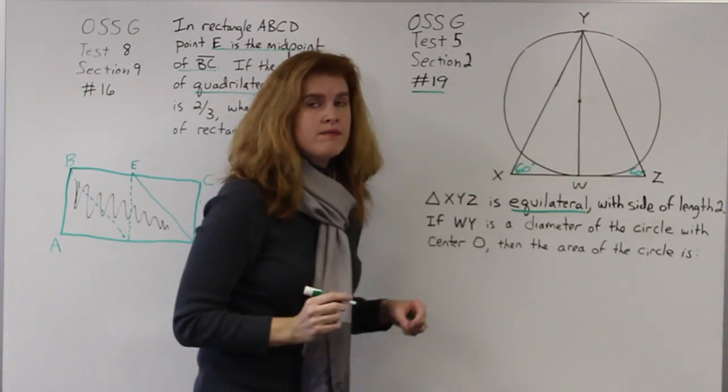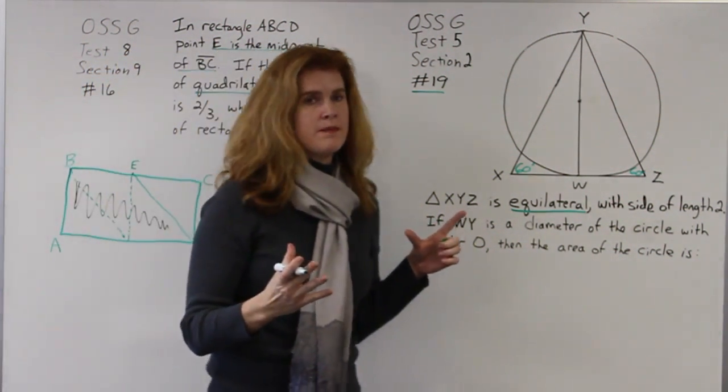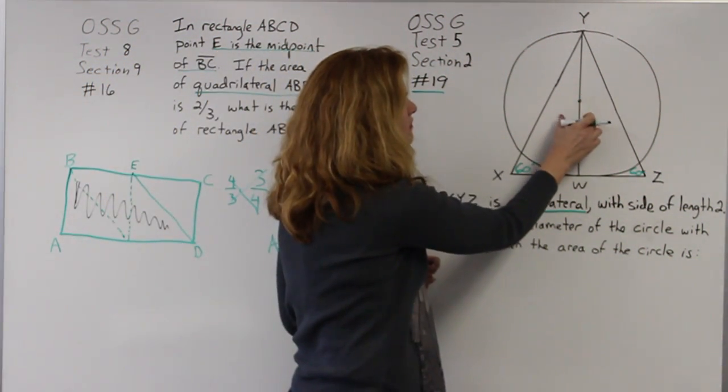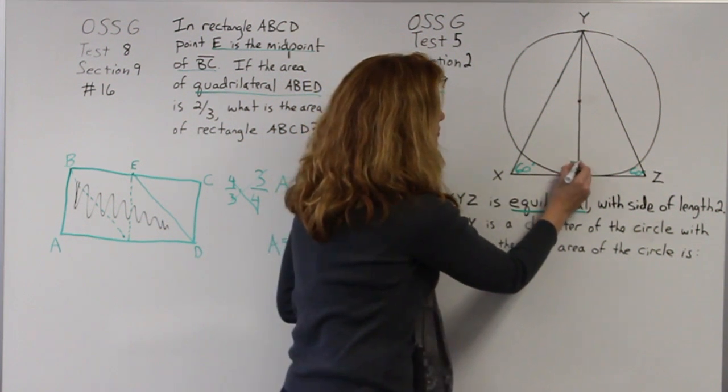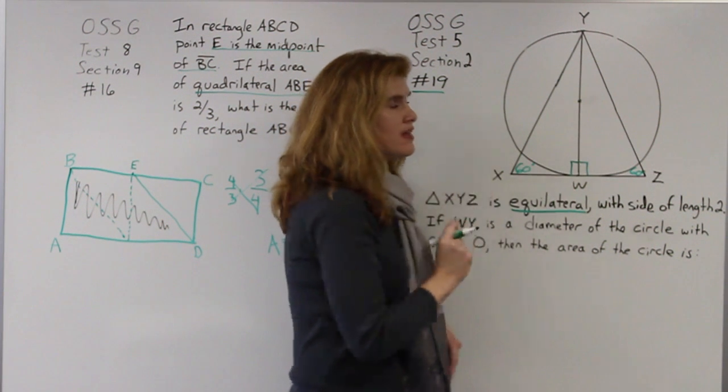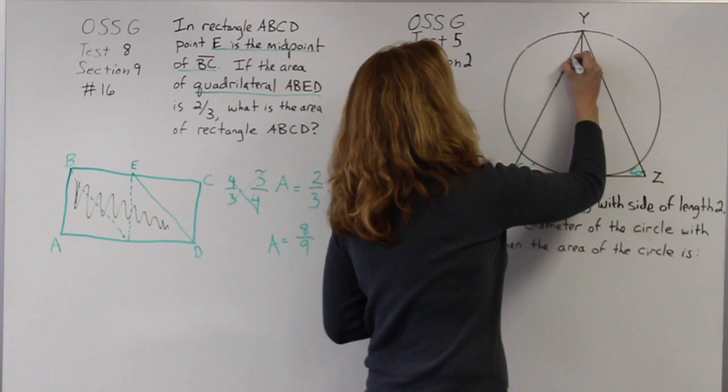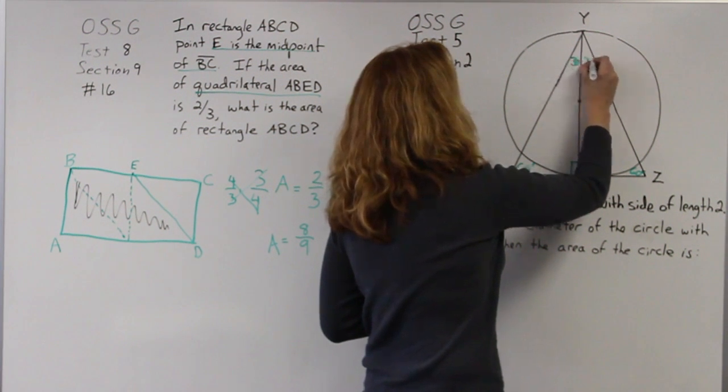I could label that angle Y 60 degrees, but I noticed something. I actually have two triangles with right angles right here. So I know that what I really have are two 30-60-90 triangles. 30-60-90 triangles, the SAT loves those problems.